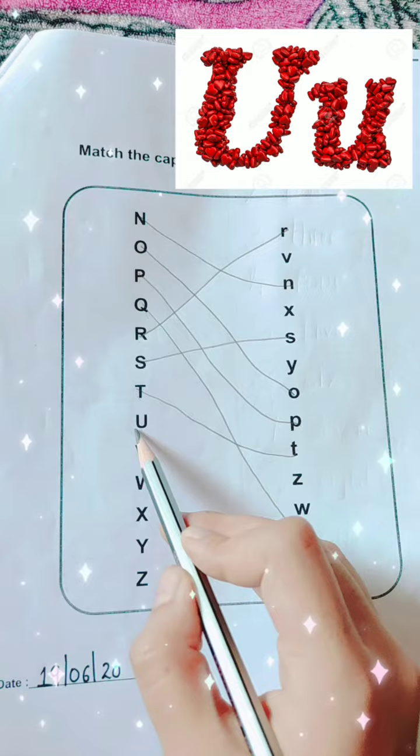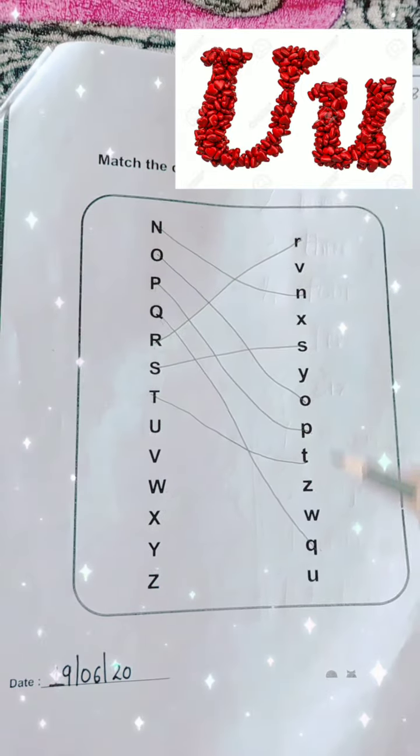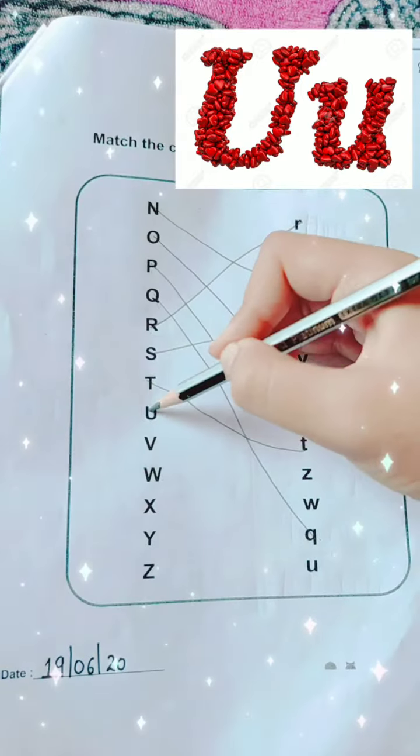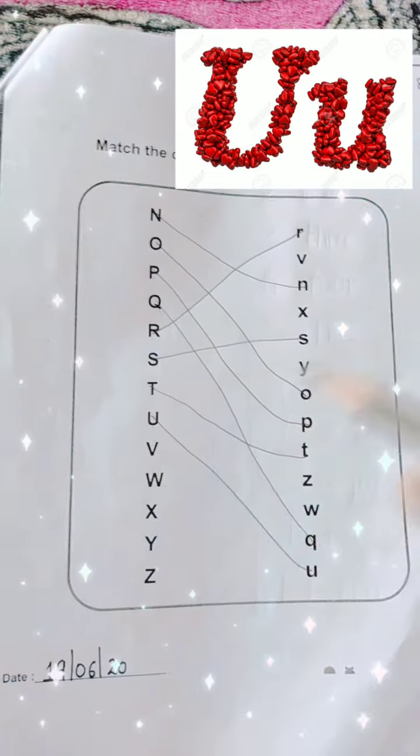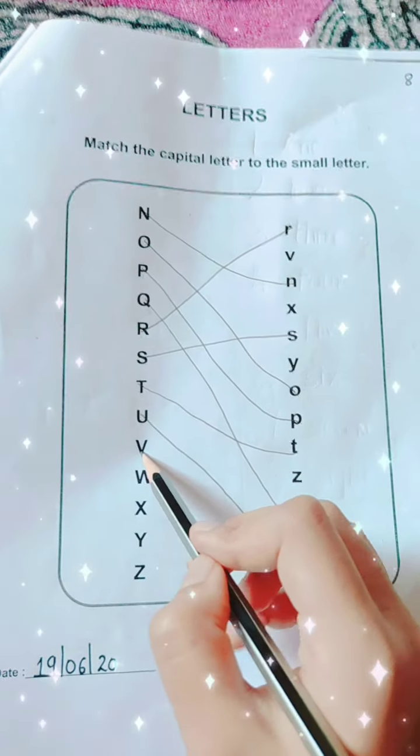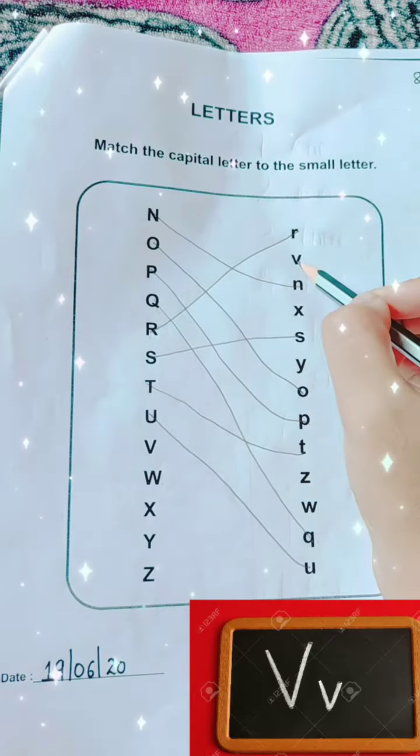U. Here. Capital U. Then small u. Okay. V. Capital V with small v.